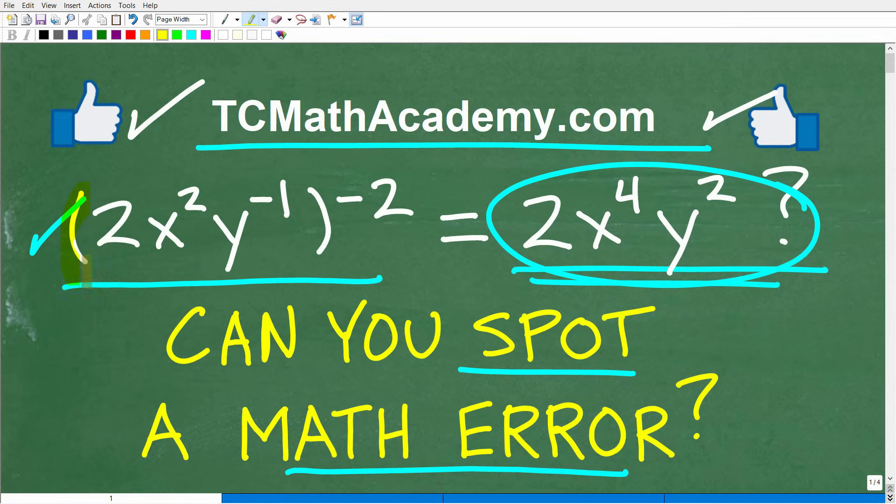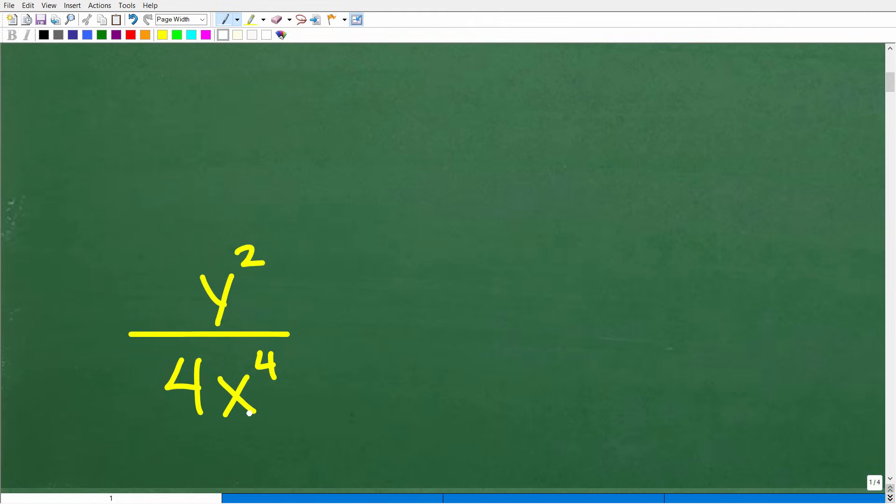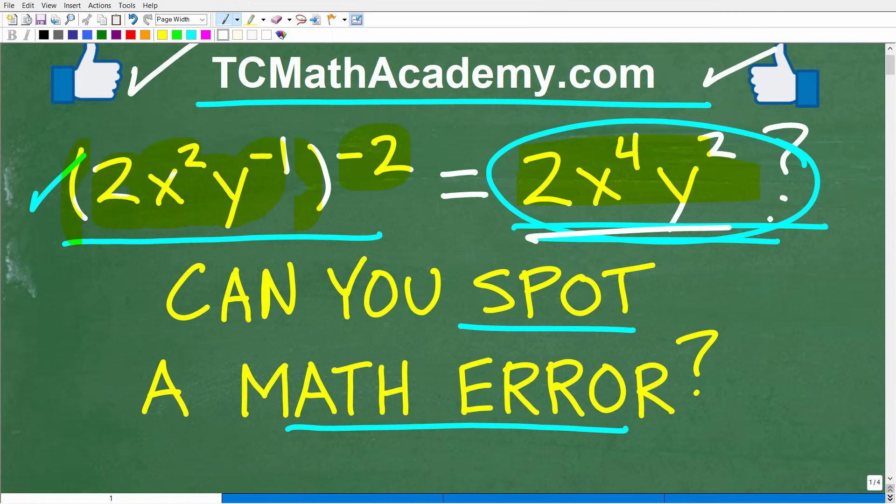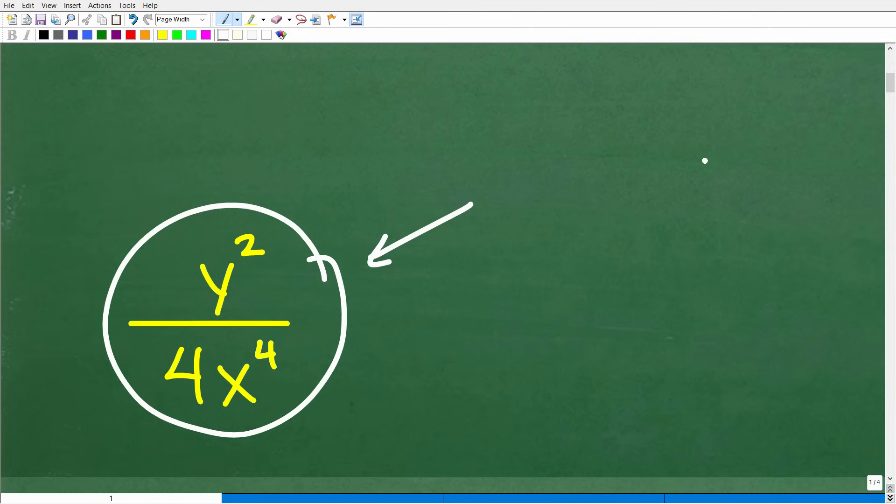Okay, so here is the problem: parentheses 2x² times y to the negative one, all that to the negative two. Is this the right answer? Well, let's take a look at the actual answer. The correct answer is y² over 4x⁴. So this does not look like the answer that I have right here. So I'm going to be in trouble with you grading my work.